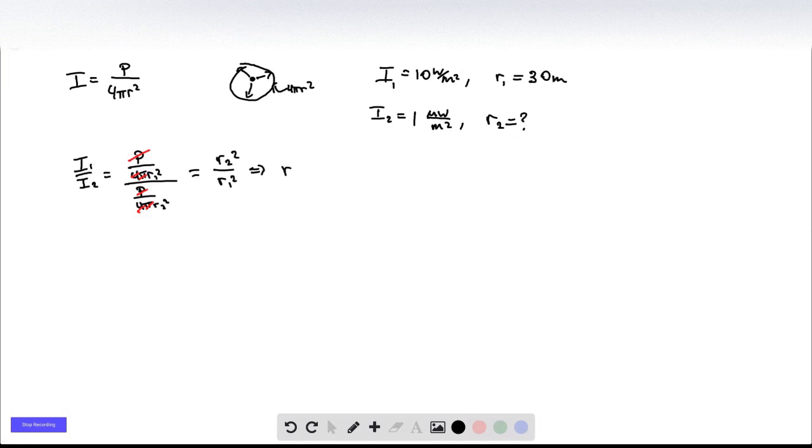And that tells us that R2 is going to be equal to R1 times the square root of I1 over I2, which is 30 meters times the square root of 10 watts per meter squared over 10 to the minus 6 watts per meter squared, because that's a microwatt. And that's going to be 95 kilometers.